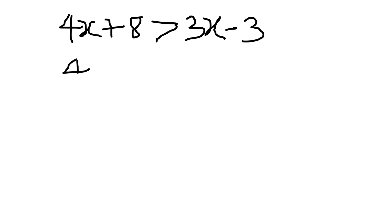So we're going to have 4x minus 3x greater than minus 3 minus 8. So we're going to have 4x minus 3x will give us x greater than minus 3 minus 8, which will give us minus 11.